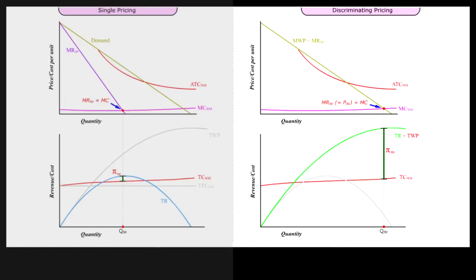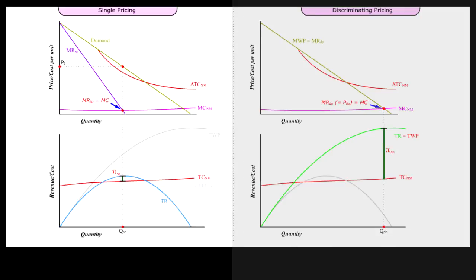Observation 1: The price discriminating firm can achieve higher output and higher profit because its total revenue, TWP, reflects the full marginal price for every unit. The total revenue of the single pricing firm reflects the same average price for every unit.